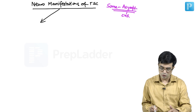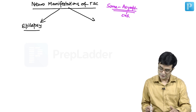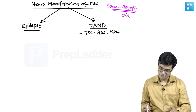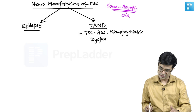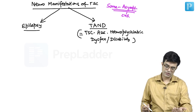If CNS manifestations do appear, they can broadly be divided into two parts. First is the development of epilepsy or seizure involvement. Second is the group of problems called TAND — Tuberous Sclerosis Associated Neuropsychiatric Dysfunction (also labeled as disability by some organizations). TAND encompasses a broad spectrum of neuropsychiatric disorders.